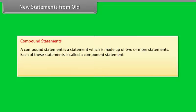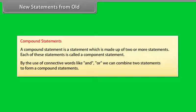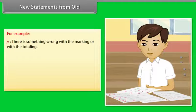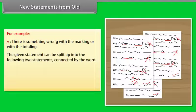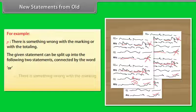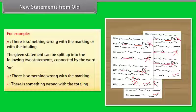Compound statements. A compound statement is a statement made up of two or more statements. Each of these is called a component statement. By the use of connective words like AND or OR, we can combine two statements to form a compound statement. For example: 'There is something wrong with the marking or with the totaling.' This splits into Q: there is something wrong with the marking, and R: there is something wrong with the totaling, connected by OR.